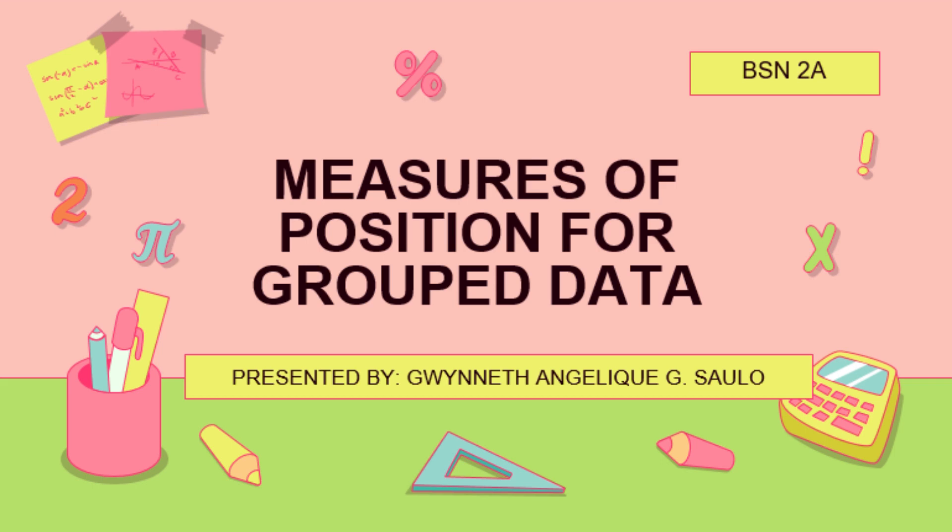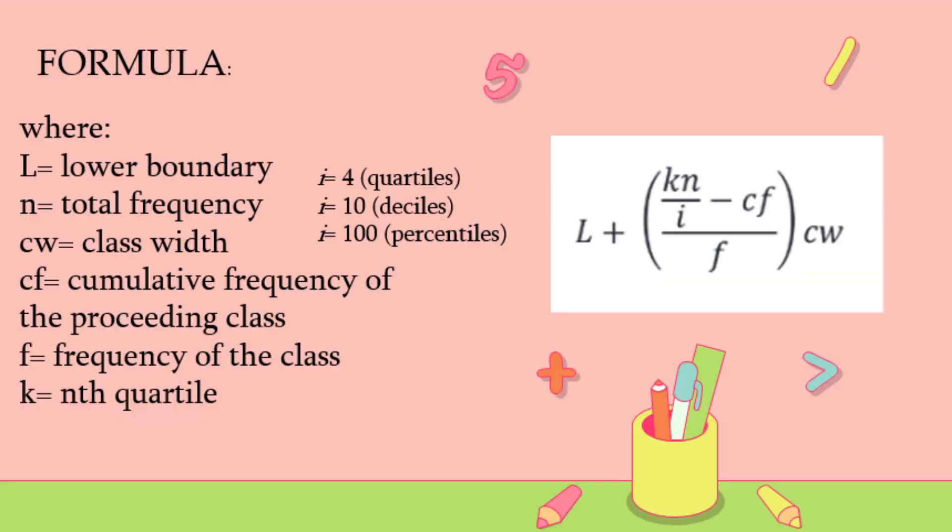Good day. For this video lesson, we are going to discuss measures of position for grouped data. We are going to use this formula where L is the lower boundary, n is the total frequency, cw for class width.